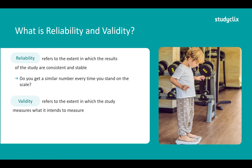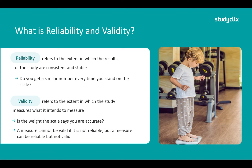Validity refers to the extent to which a study measures what it intends to measure. If we are studying depression, we need to use measures that study depression and not anxiety. For example, is the weight the scale says you are actually accurate — are you really 60 kilos or are you actually 45 and the scale is lying to you? Something important to keep in mind is that a measure cannot be valid if it is not reliable, but a measure can be reliable but not valid.